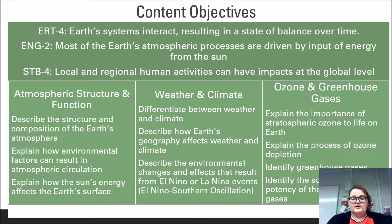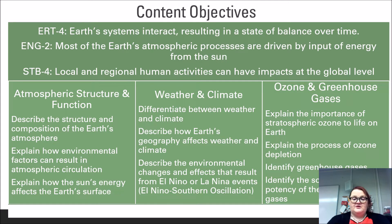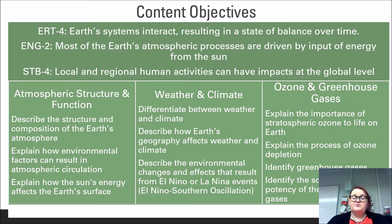At the end of this lesson, you should be able to describe the structure and composition of the Earth's atmosphere, explain how environmental factors can result in atmospheric circulation, explain how the Sun's energy affects the Earth's surface, differentiate between weather and climate, describe how Earth's geography affects weather and climate, describe the environmental changes and effects that result from El Niño or La Niña events and the El Niño Southern Oscillation, explain the importance of stratospheric ozone to life on Earth, explain the process of ozone depletion, identify greenhouse gases, and identify the sources and potency of greenhouse gases.